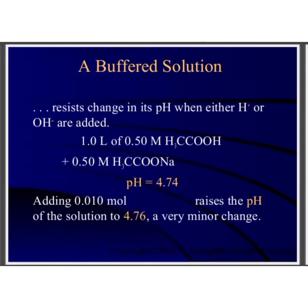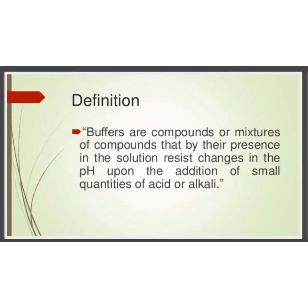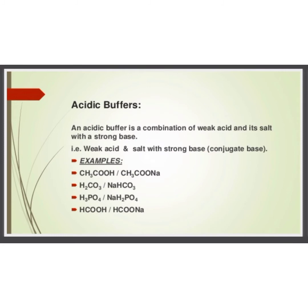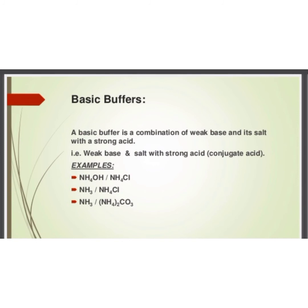Buffer Solution: a buffer solution resists the change in its pH when a small amount of acid or base is added to it. Buffers are of two types: acidic buffers and basic buffers. An acidic buffer is a combination of a weak acid and its salt with a strong base — for example, a mixture of acetic acid and sodium acetate. A basic buffer is a combination of a weak base and its salt with a strong acid — for example, ammonium hydroxide and ammonium chloride.